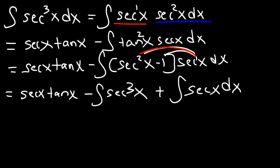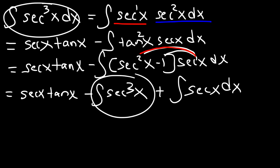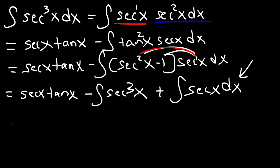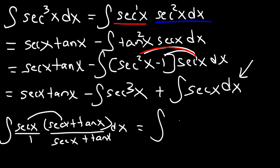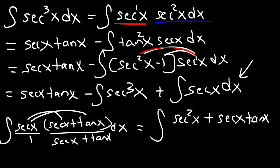Let's focus on the integral of secant x. To integrate secant, you need to multiply the top and bottom by secant x plus tangent x. If you do, you get the integral of secant squared plus secant tangent x on top, and secant x plus tangent x on the bottom, dx.